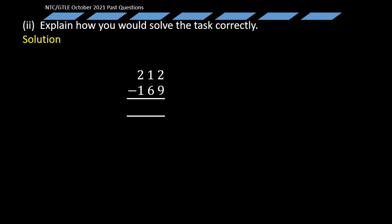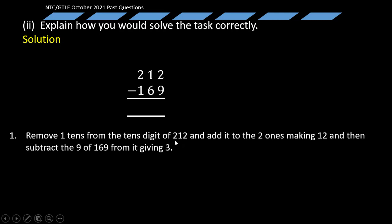Normally questions like this involve you giving a step-by-step guide in addition to providing the solution as well. Number one: We remove one tens from the tens digit of 212 and add it to the ones, making 12, and then subtract the 9 of 169 from it giving 3. What does that mean? We remove one, this one. When you remove it, it will be left with zero. Then you bring it to the ones column, that makes it 12 ones. Now 12 ones minus 9 will simply give us 3 ones. That is what the first step is simply talking about.